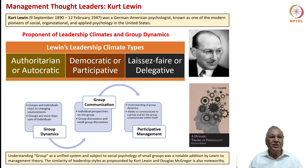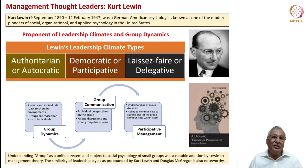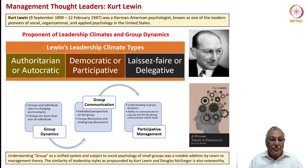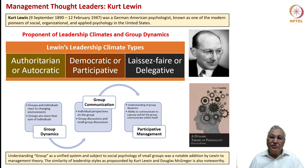Kurt Lewin talked about leadership climates and group dynamics. Group dynamics is an extremely important topic in organizational behavior. He said there are three types of leadership climate: authoritarian or autocratic, democratic or participative, and laissez-faire or delegative. Several departments in companies display one or the other of these three. He also noted that there are always group dynamics existing in organizations — groups and individuals react to changing environments differently, and groups are more than the sum of individuals.